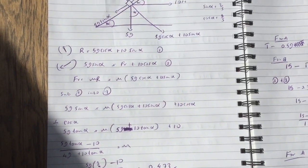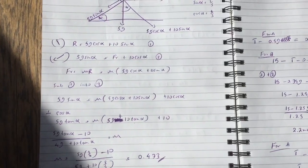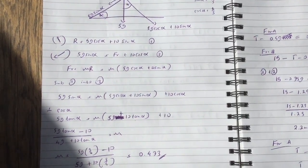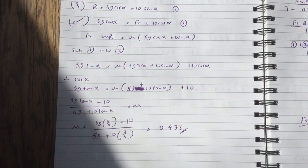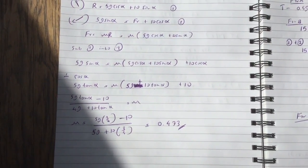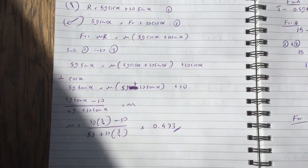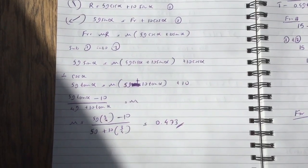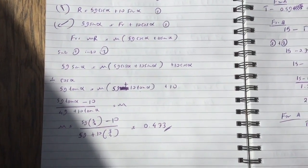And if you sub equation one into two, you get 5g sin alpha equals mu bracket 5g cos alpha plus 10 sin alpha plus 10 cos alpha. Now you can simplify it directly from there. What I did instead is I divided everything by cos alpha. So when you do sin over cos, it becomes tan alpha and wherever there's cos alpha, it cancels completely. You only do this if every single item has either sin or cos alpha, and you can clearly see there is.